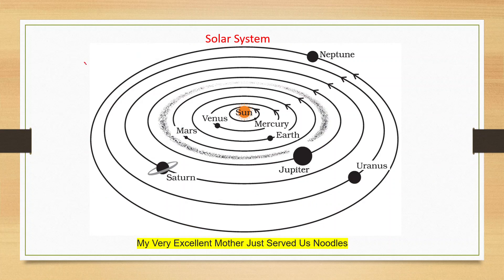You can remember these planets from this sentence: 'My very excellent mother just served us noodles.' That is M for Mercury, V for Venus, E for Earth, M for Mars, J for Jupiter, S for Saturn, U for Uranus, and N for Neptune — in order from the sun.